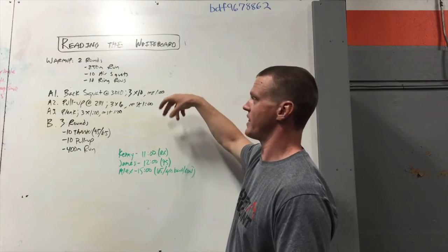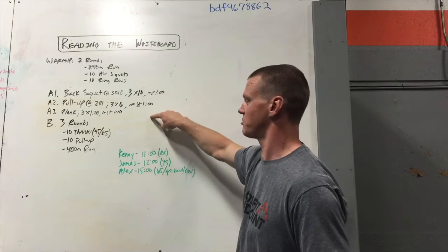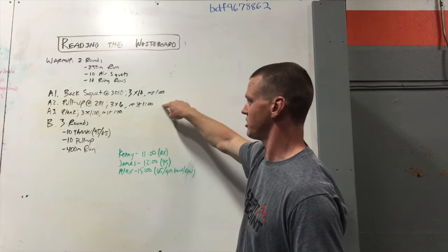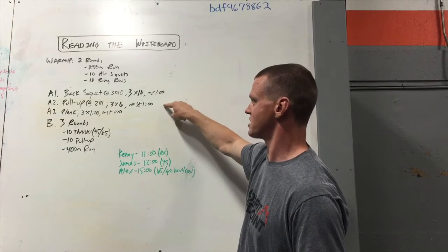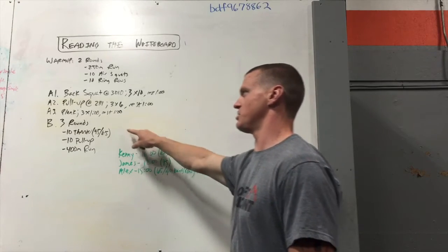So you'll do the way that would then look in context is a set of back squats, a set of pull-ups, a set of planks, a set of back squats, a set of pull-ups, a set of planks, a set of back squats, a set of pull-ups, a set of planks, for a total of three sets, and then you'll move on to the B work.